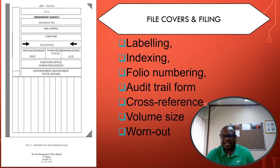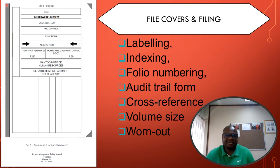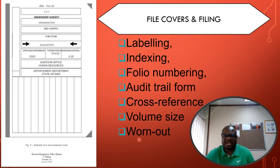The volume size of the file must be three centimeters thick and must be closed once it reaches that level or 150 pages. The line on the spine of the file will stretch to show that the file is full and needs to be closed, so that the file does not lose its shape or become unprofessional. As a record practitioner, you must also ensure that worn-out covers of files are replaced from time to time to avoid damage to the records inside.